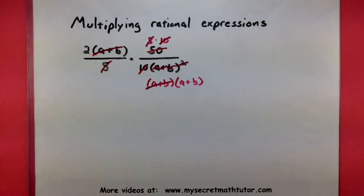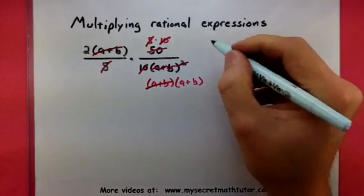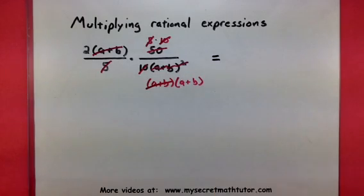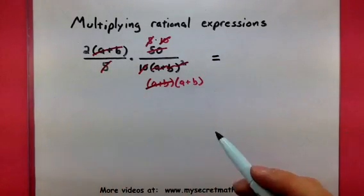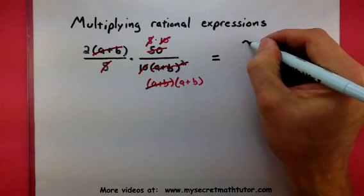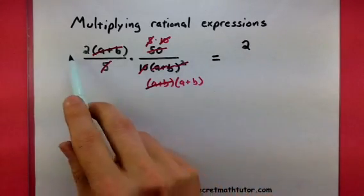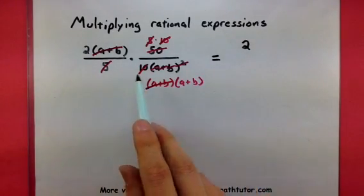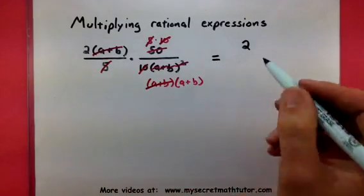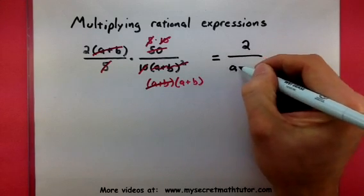My work is getting kind of messy here, so let's go ahead and write down everything that's left over. In this expression, looks like we only have a 2. Let's see, nothing else up top. Check the bottom. Looks like the only thing left is an a plus b.